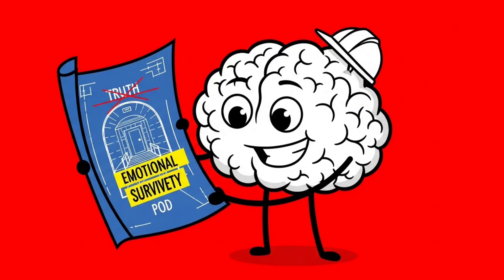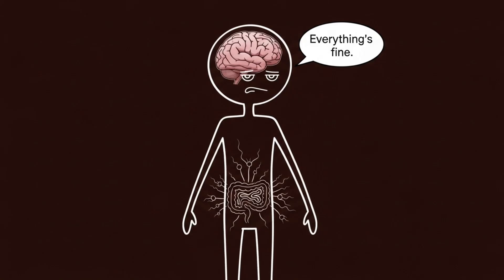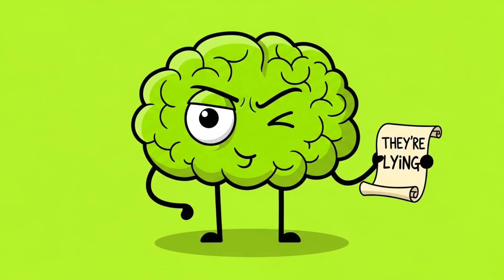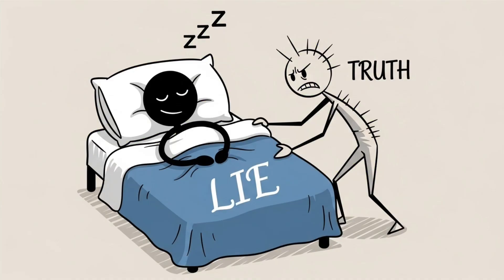Your brain is not built for truth, it's built for emotional survival. So when someone smiles and lies straight to your face, your neurons light up, your gut tenses, your eyes catch the flicker, and your brain calmly says everything's fine. It's not stupidity, it's self-preservation. Your brain knows you're being lied to, it just doesn't tell you. Because sometimes, lies are easier to live with than the truth.